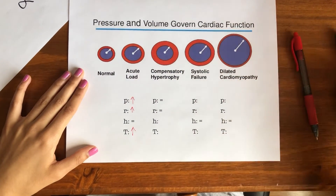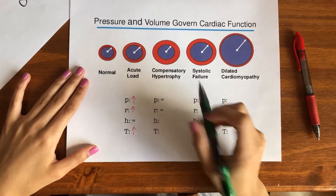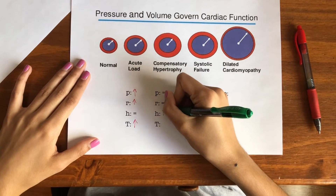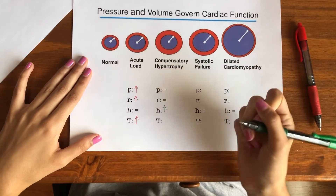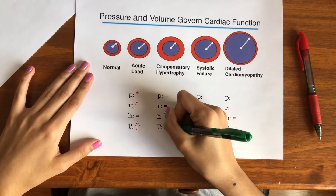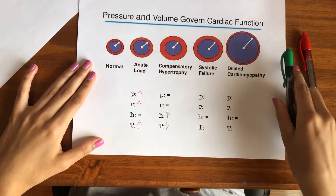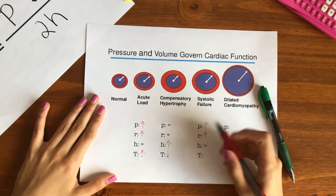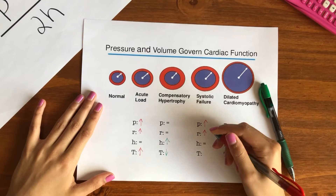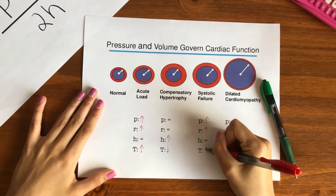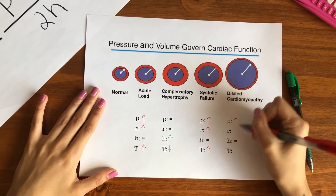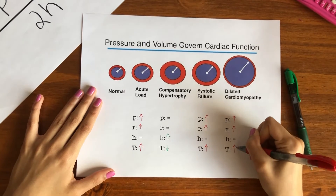In response, the wall thickness of the ventricle increases in order to negate the effect of increased pressure and radius on wall stress. However, beyond a certain point, the ventricle wall no longer remodels to accommodate blood accumulation, and wall stress passes a threshold into heart failure.